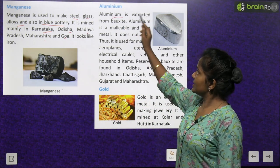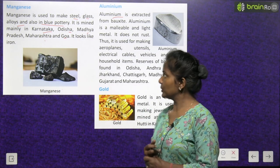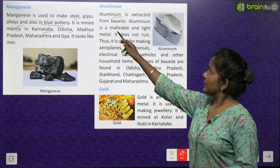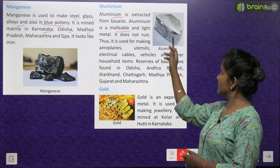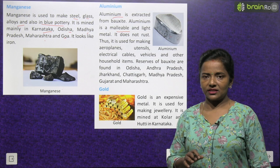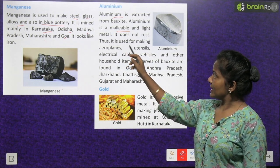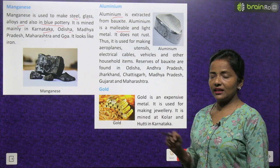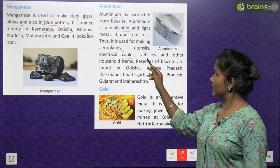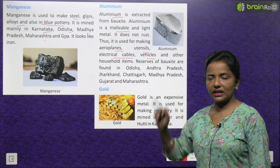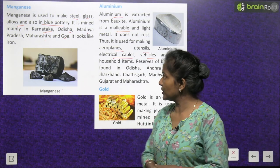Aluminium is extracted from bauxite. Aluminium is a malleable and light metal — halka metal hai ye. This is aluminium. It does not rust — ismein jung nahi lagta. Thus it is used for making aeroplanes, utensils, electrical cables, vehicles and other household items, because it is rust-free.